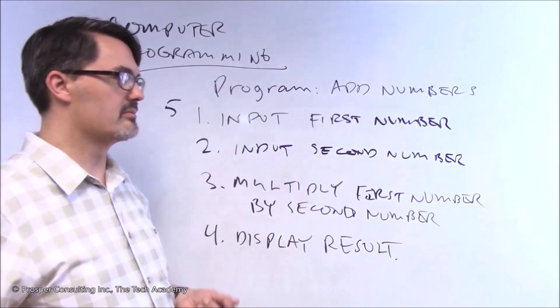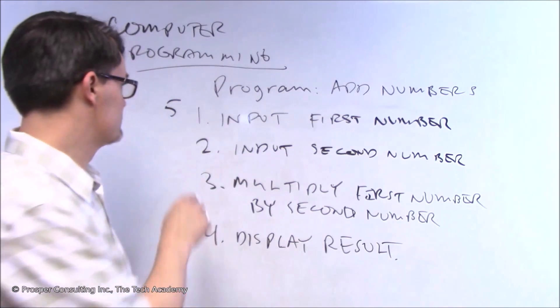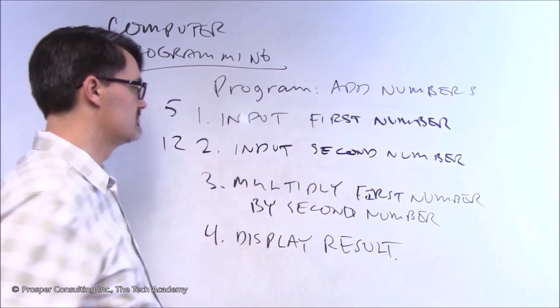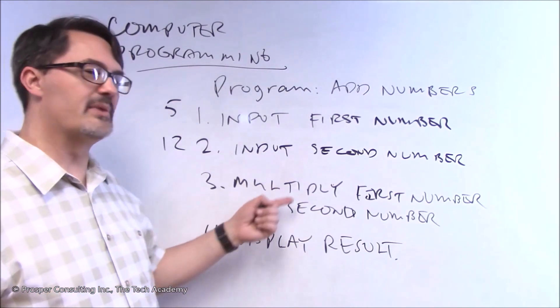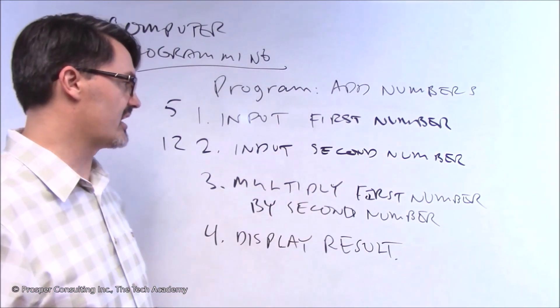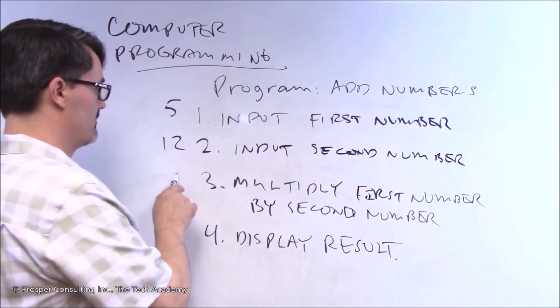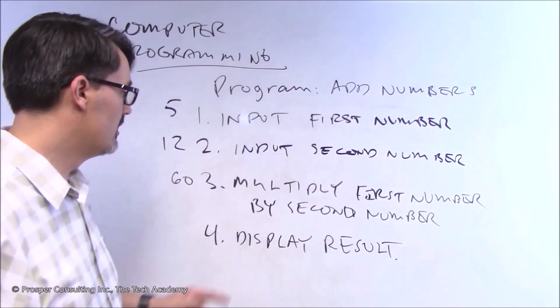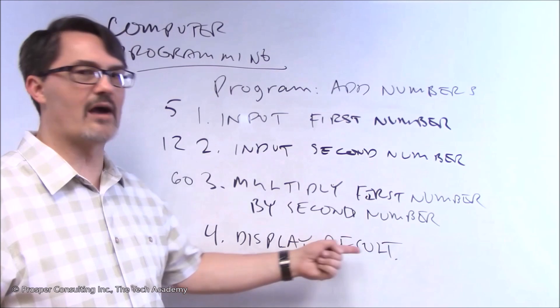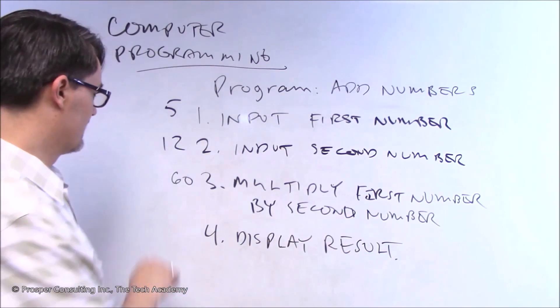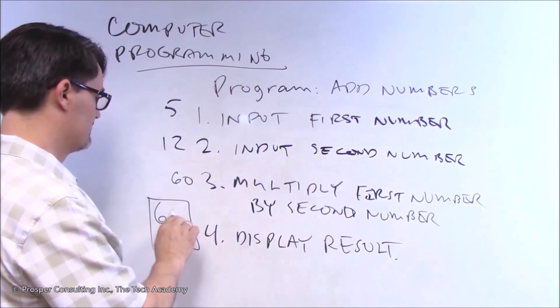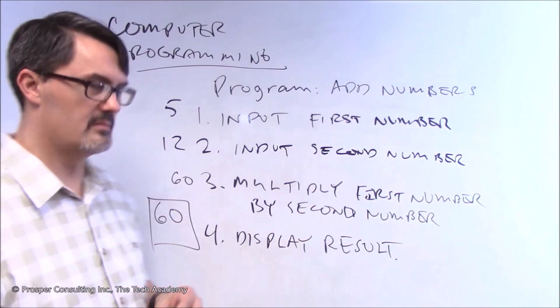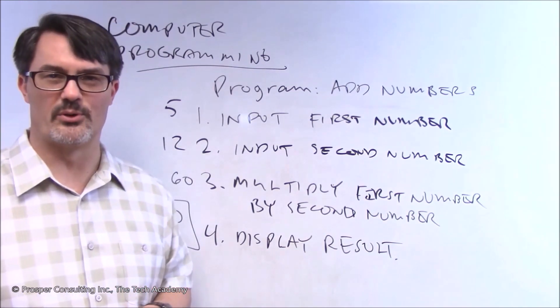then it would input the second number. And the user would input a number, say, 12. The computer would then be instructed to multiply the first number by the second number. And it would do that. The answer is 60. But then the computer would be explicitly told to display that result on the screen. And so on the screen, you would see 60.